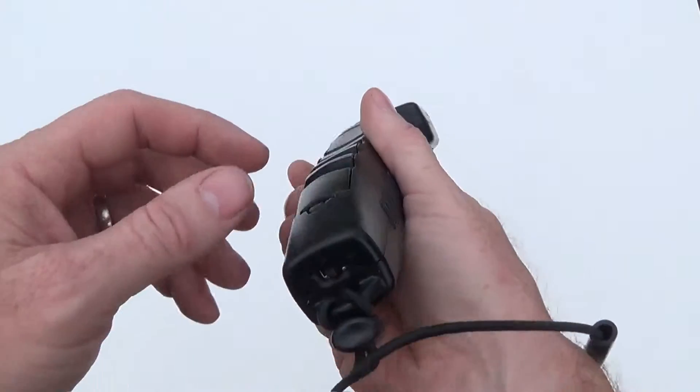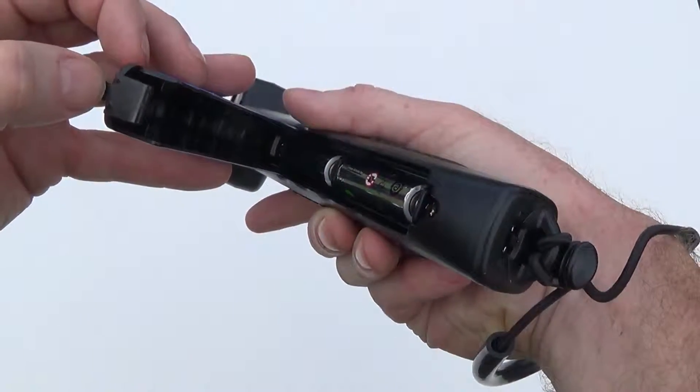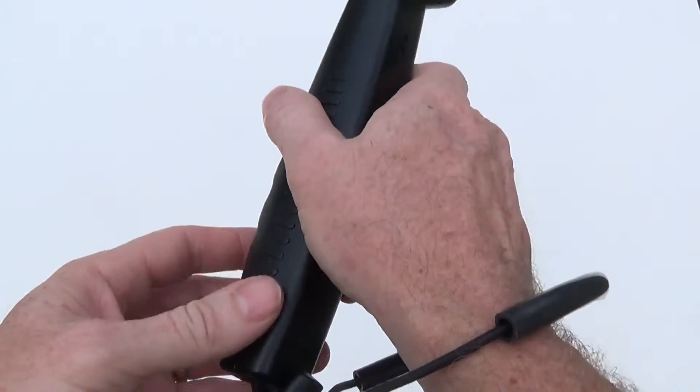Before starting your unit, be sure to install two standard AA alkaline batteries in the battery compartment located on the lower portion of the handle.